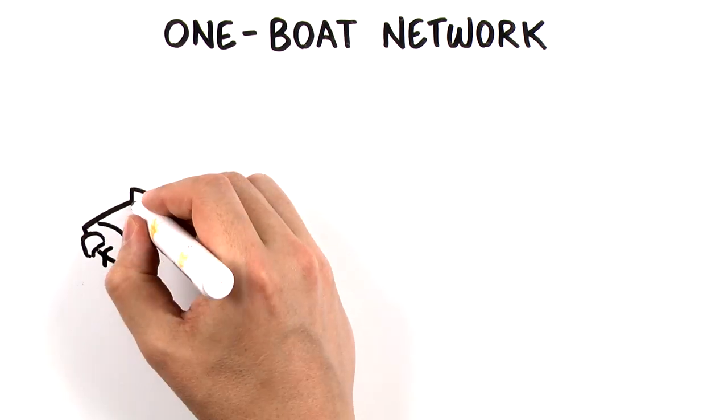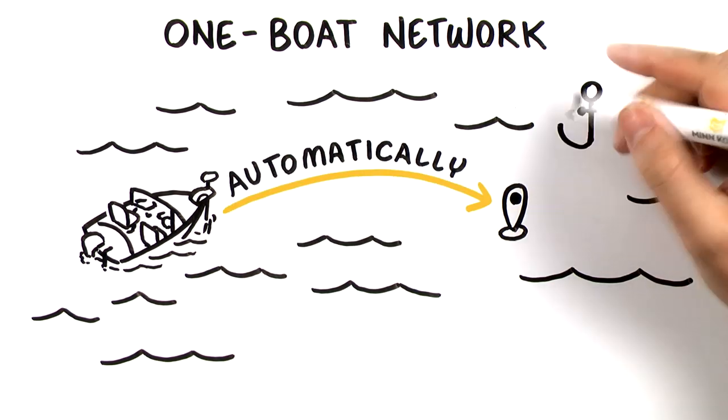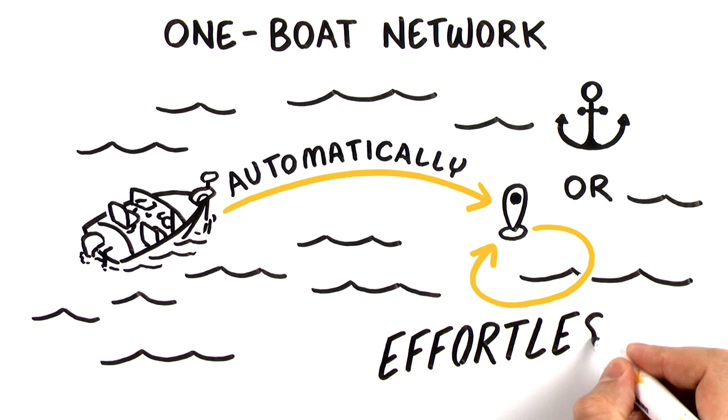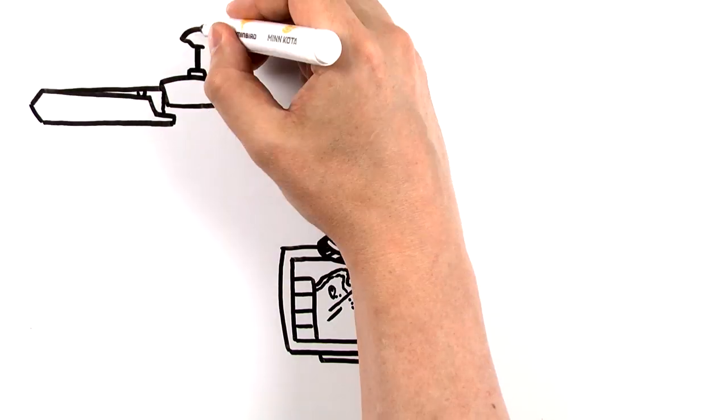When One Boat Network products talk to each other, they can navigate your boat automatically. They can work together to anchor or reposition you effortlessly. Your Humminbird fish finder can tell your Minn Kota trolling motor right where to go.